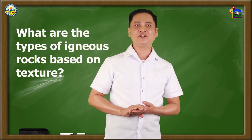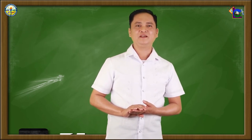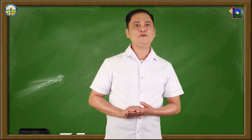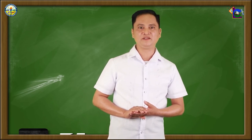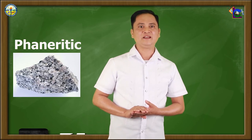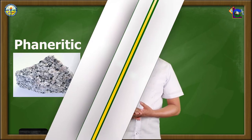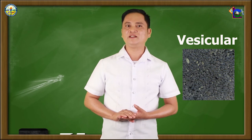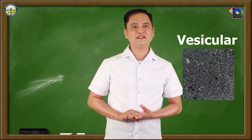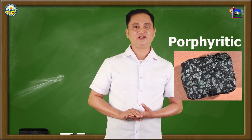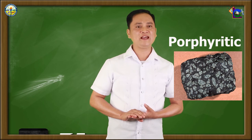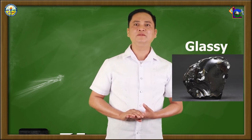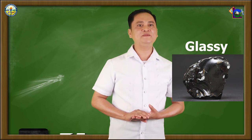What are the types of igneous rocks based on texture? Igneous rocks have different textures. The texture of a rock is the size and arrangement of the minerals it contains. The phaneritic texture has enlarged minerals. The aphanitic texture has mineral grains that are too small. The vesicular texture has many pits from gas escape. The porphyritic texture has two distinct grain sizes — large and small. Lastly, the glassy texture has no obvious minerals, like the obsidian rock.